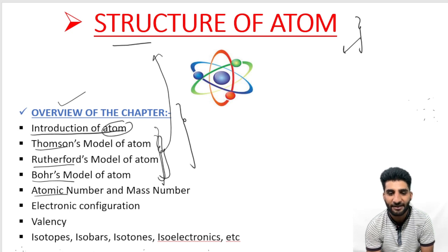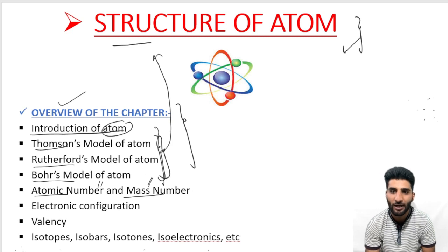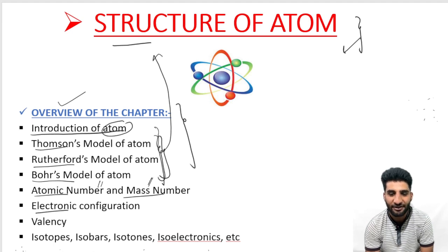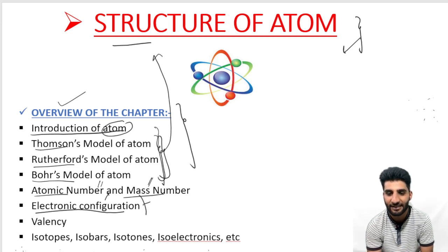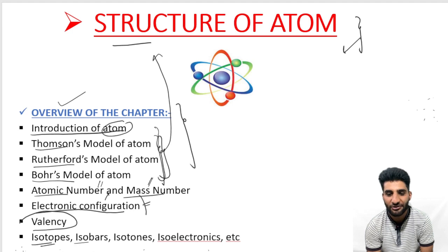After that, there is atomic number and mass number — this is the application part, where we will discuss atomic number and mass number for different atoms and elements. The next topic is electronic configuration, which deals with how electrons are arranged. Then there is valency of the element, and the last topics are isotopes, isobars, isotones, and isoelectronics. These are the topics from which we can expect the maximum number of questions.